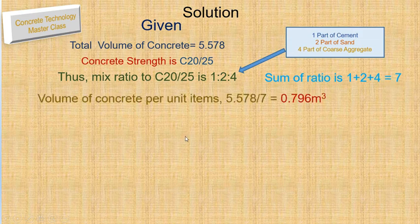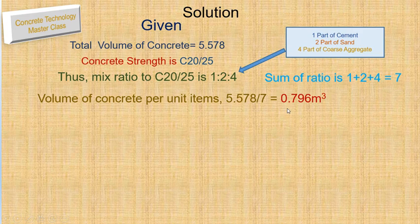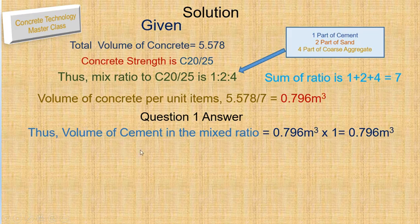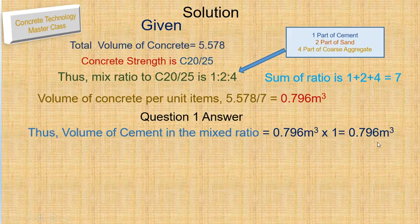The volume of concrete per unit item is the total volume divided by the sum of the ratio: 5.578 ÷ 7 = 0.796 cubic meters. To answer question one, the volume of cement in the mix ratio equals the volume per unit item multiplied by the cement part, giving 0.796 cubic meters as the volume of cement content in this volume of concrete.